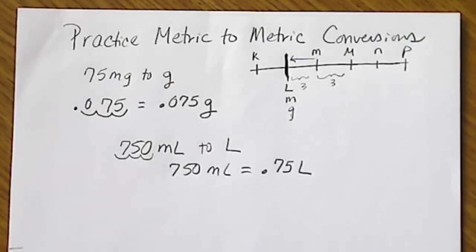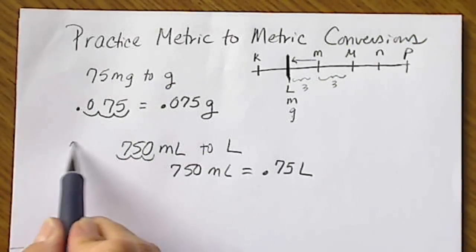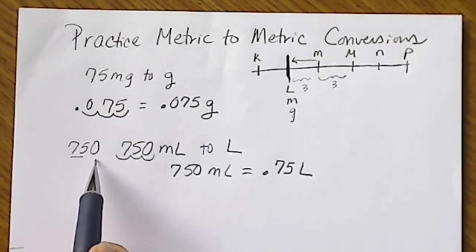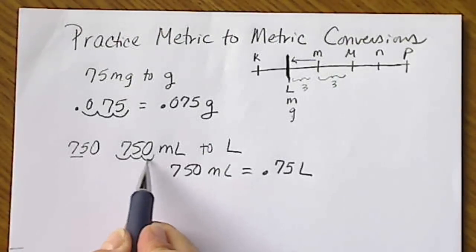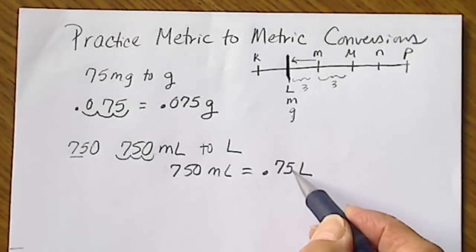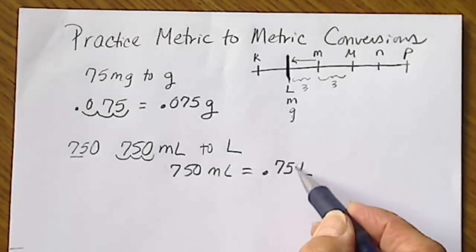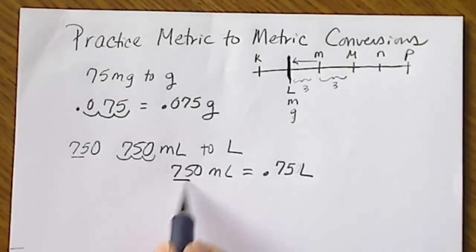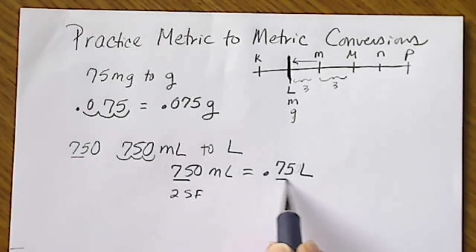And when we are paying attention to significant figures, 750 only has two significant figures because that zero is not significant because there's no decimal in the number. So when we move the decimal to the left to convert from milliliters to liters, we're not going to keep this zero that's to the right of the 5. So we started with two significant figures, and when we convert, we still have two significant figures.